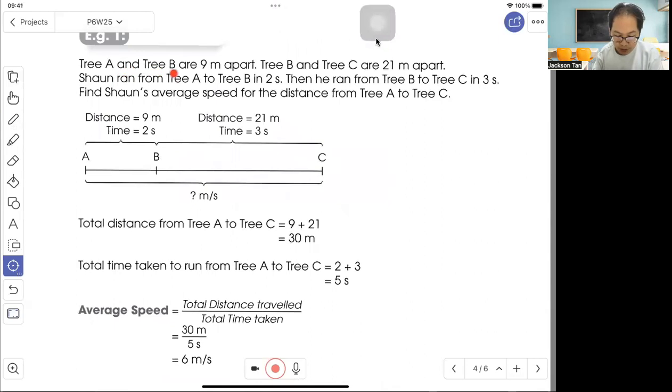So 3A and 3B are 9 meters apart. 3B and 3C are 21 meters apart. I draw a speed-time diagram putting 3A, 3B, 3C with 9 meters distance and 21 meters distance. Then Song went from 3A to 3B in 2 seconds, then B to C in 3 seconds. Find Song's average speed for the distance from A to C. The formula for average speed is total distance divided by total time. So total distance: 9 plus 21 equals 30 meters. Total time: 2 plus 3 equals 5 seconds. So I take 30 divided by 5, which is 6 meters per second as the average speed.